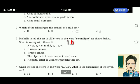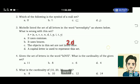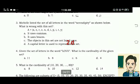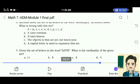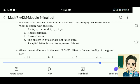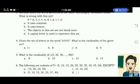2. Which of the following is a symbol of a null set? Letter D. 3. Michelle listed the set of all letters in the word serendipity as shown below. What is wrong with this set? A is equal to S-E-R-E-N-D-I-P-I-T-Y. A. It uses commas B. It uses braces C. The objects in this set are not listed once D. A capital letter is used to represent this set. The correct answer is letter C.